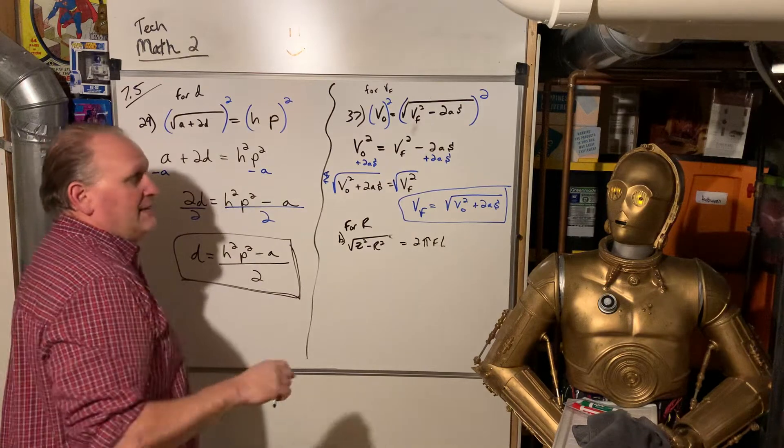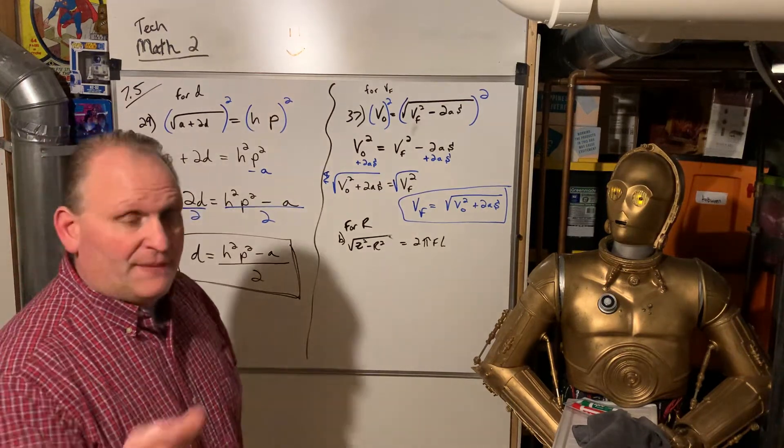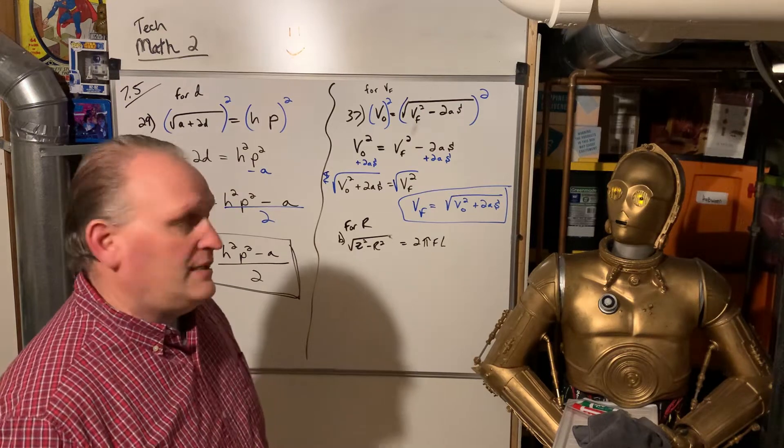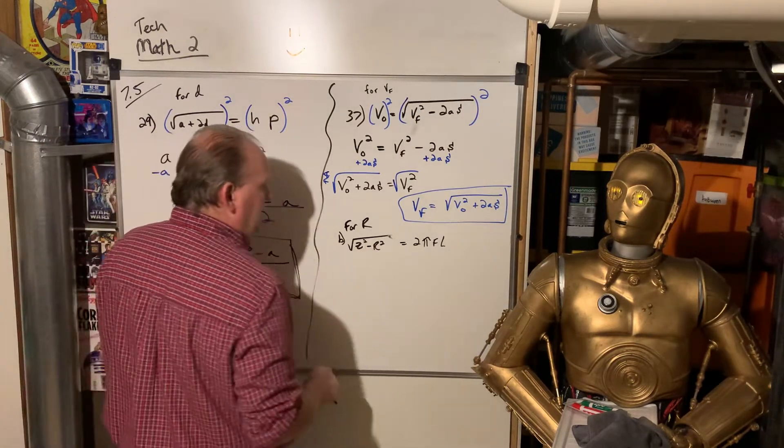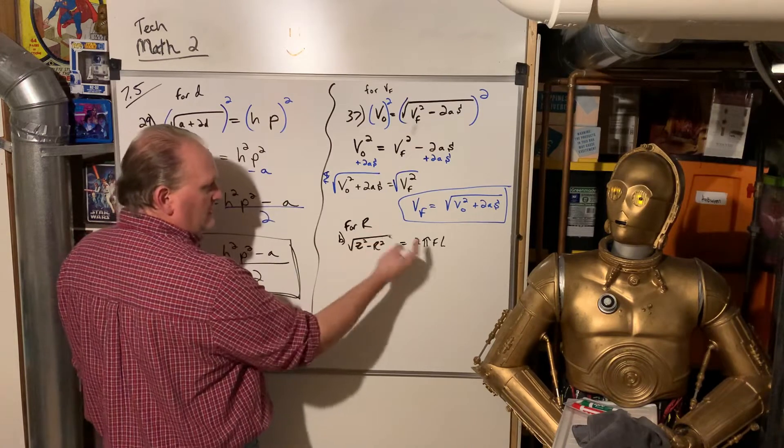So V sub F is equal to the square root of V naught squared plus 2AS. We cannot take that square root on the V naught squared because of this plus sign. You can never distribute a square root over a plus or a minus sign. You can only separate them out when they're being multiplied. But when it's a plus or a minus like that, you can't do it.